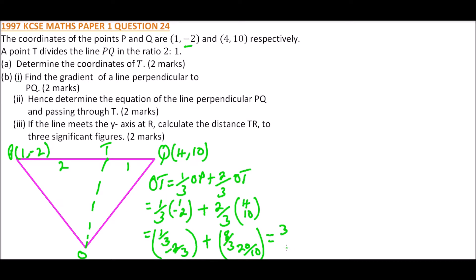So here we have made an error — let's correct that. The y-component should be -2/3 + 20/3. That is -2 plus 20 over 3, which is 18/3 = 6. And 9/3 = 3. This means the x-component is 3 and the y-component is 6. Therefore, the coordinates of T are (3, 6).